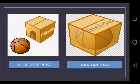In the next picture, a cat is inside the box. The word inside tells us where the cat is. A ball is inside the box.